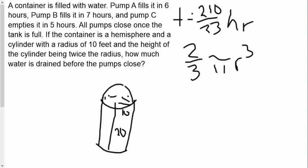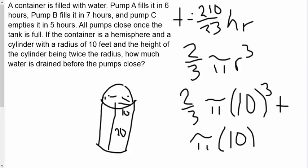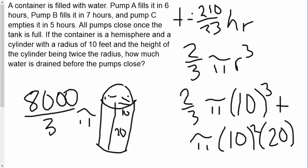So this means that we are going to have to do two-thirds times pi times ten cubed plus pi times the radius squared times height. So this gives us a volume of eight thousand over three pi, and that's going to be feet cubed. Eight thousand over three pi feet cubed.